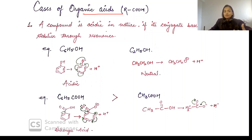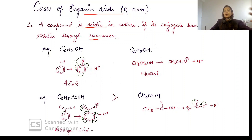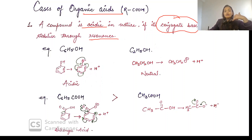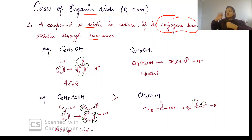A compound is said to be more acidic if its conjugate base is getting resonance stabilized. Acids are proton donors, so when they donate a proton they form the conjugate base. If that conjugate base is stabilized, it will not react further with the proton and will be in more stability — meaning it has lost its electron, so it will be more acidic.